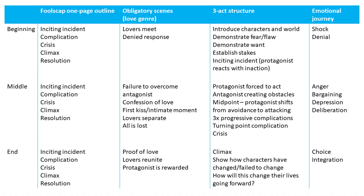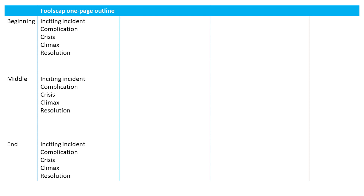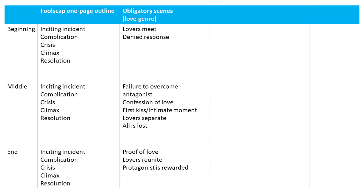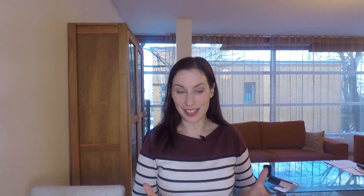This makes things a little bit confusing because it means there are three different outlining methods you need to follow. The first is the full-scat method — the one-page full-scat is divided into three different acts and each act has an inciting incident, a complication, a crisis, a climax and a resolution, so times that by three, that's 15 different scenes. Then you have the obligatory scenes for the genre — for the love genre it was around nine or ten scenes. So that's another ten-ish scenes to look at.